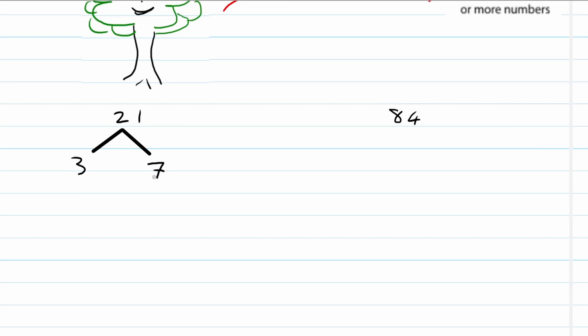Can we take 7 further? Is 7 a prime number? It is a prime number. So that means 21 has already been divided into its prime factors. So we can write it down like this, 21 equals 3 times 7.